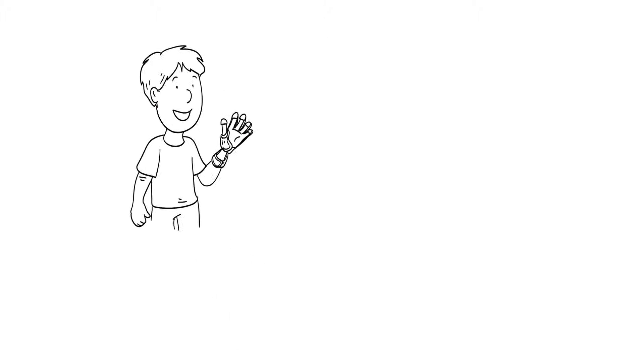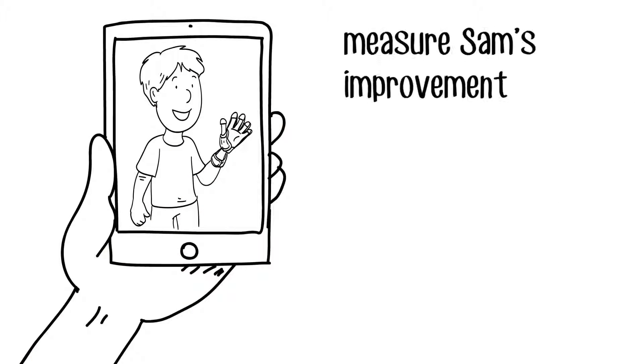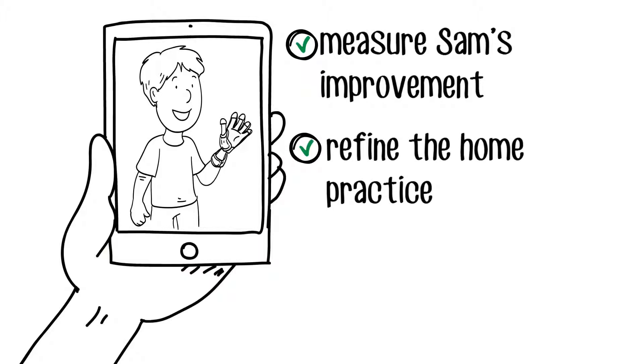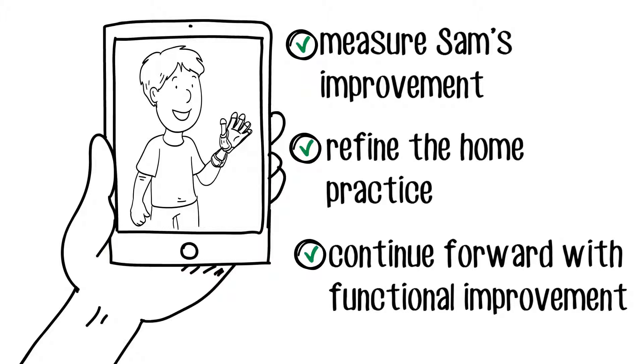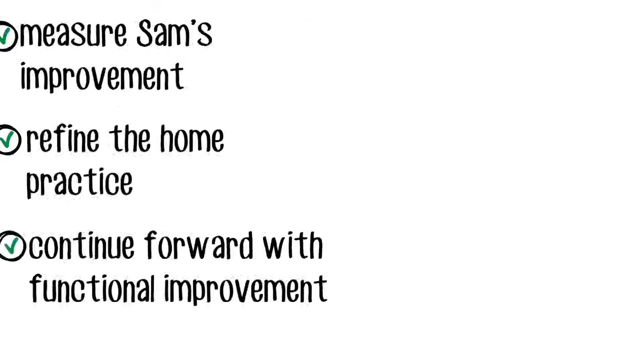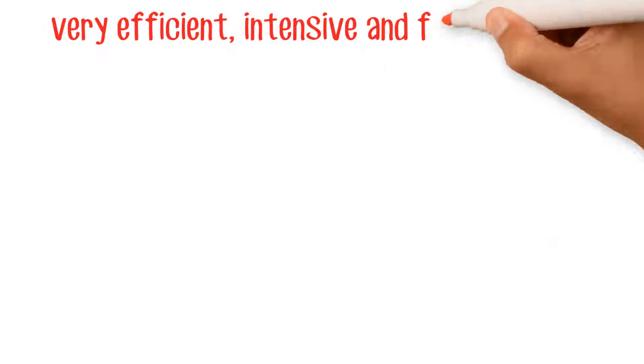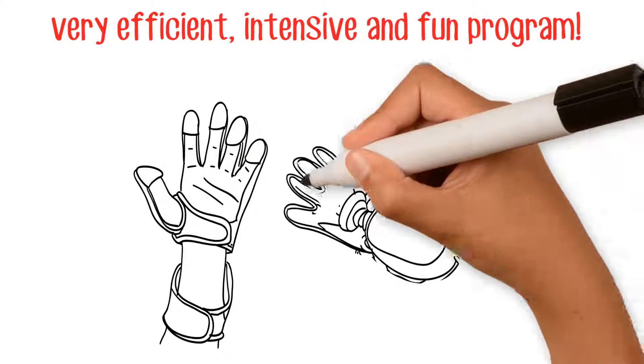So when the next session with Julia begins, they can measure Sam's improvement, refine the home practice, and continue forward with functional improvement. This way, Sam's hand is being rehabilitated in a very efficient, intensive, and fun program.